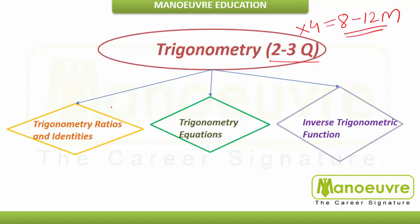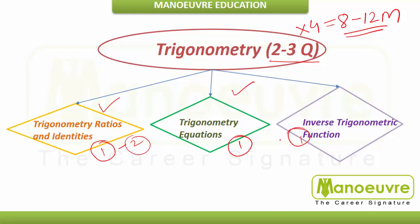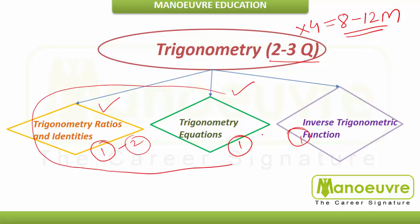The major parts for Trigonometry are Trigonometric Ratios and Identities, and Trigonometric Equations. You can expect around one to two questions from each of these. Sometimes a question also appears from Inverse Trigonometry. We will understand each topic one by one.